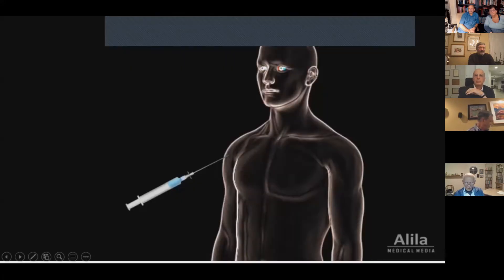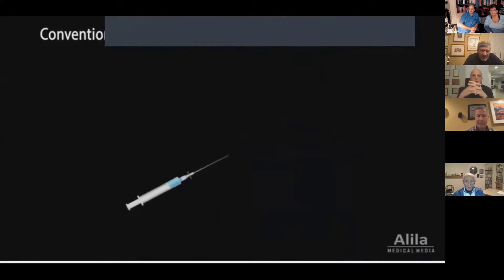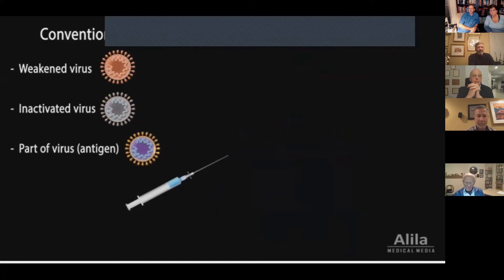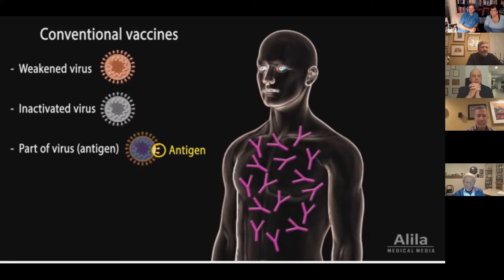The purpose of a vaccine is to mimic an infection, activating the body's immune response, but without causing the illness. Conventional vaccines usually contain a weakened or inactivated virus, or a piece of a viral protein called an antigen. These viral elements don't cause disease, but they trick the immune system into thinking an infection has occurred, so it responds by producing antibodies against the virus.